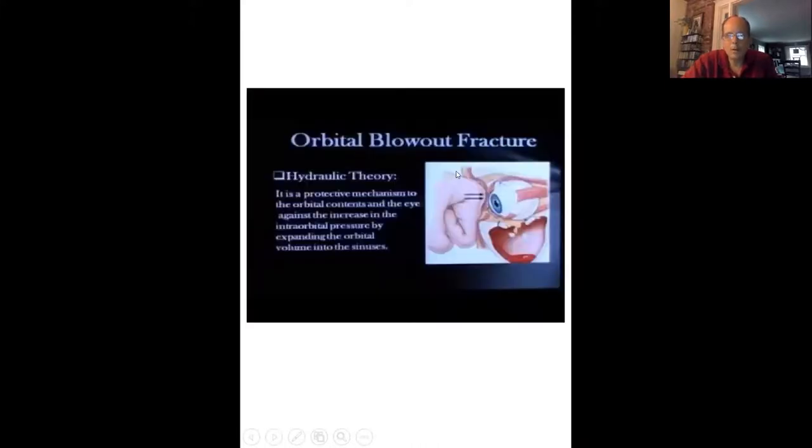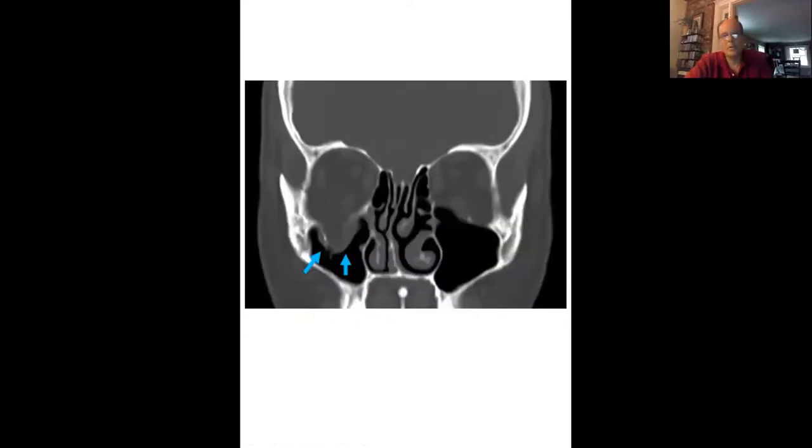So orbital blowout fractures occur because the orbit has a limited volume. And if an impact such as a fist or a ball increases the pressure within the orbit, the weakest point in general is going to be the floor of the orbit. And it's not so much the globe that gets caught in the fracture. It's not always even the muscle, the inferior rectus or inferior oblique that gets caught. It's very often the periorbita that gets caught and leads to the restriction.